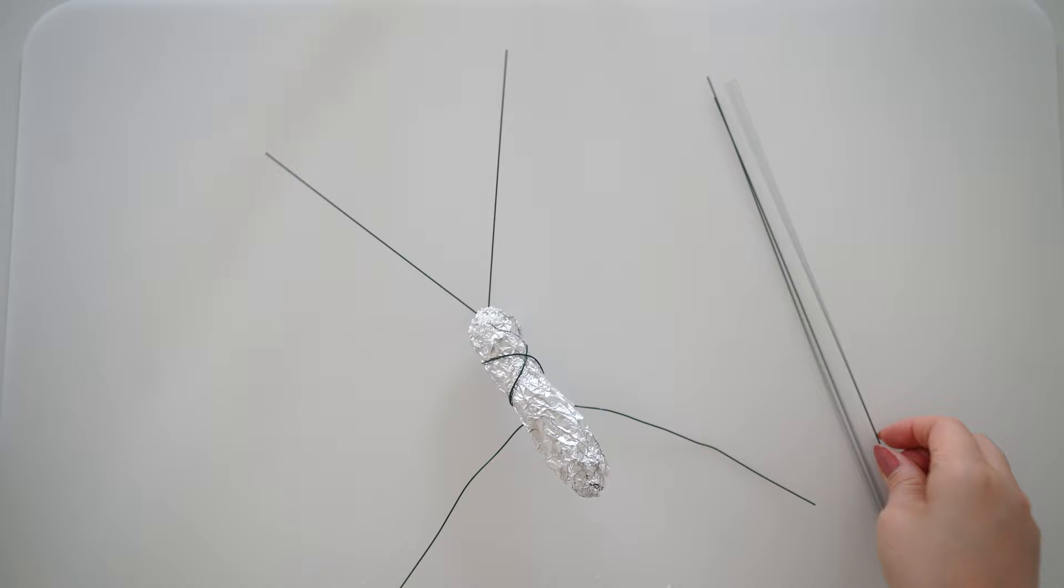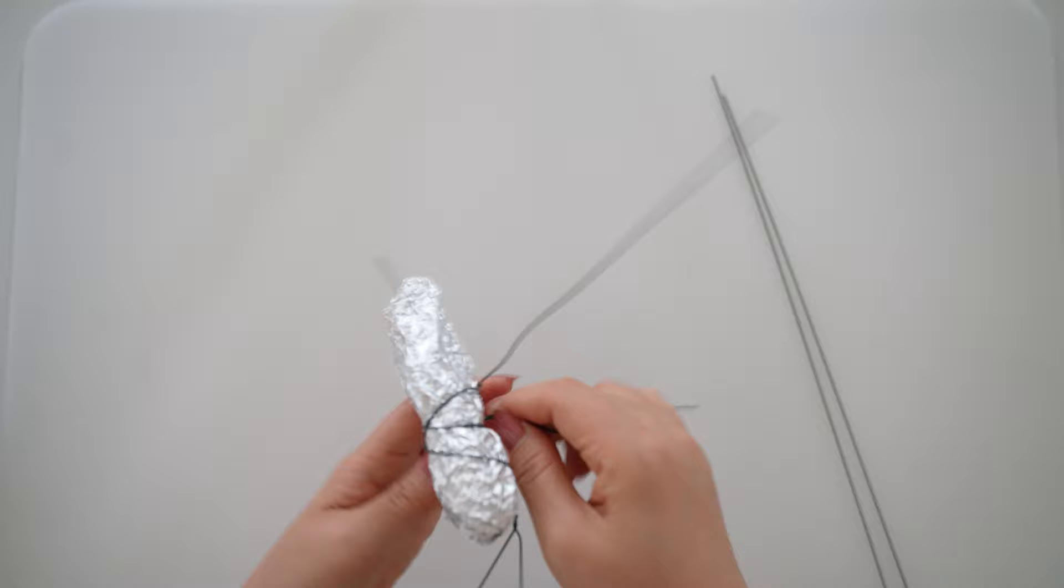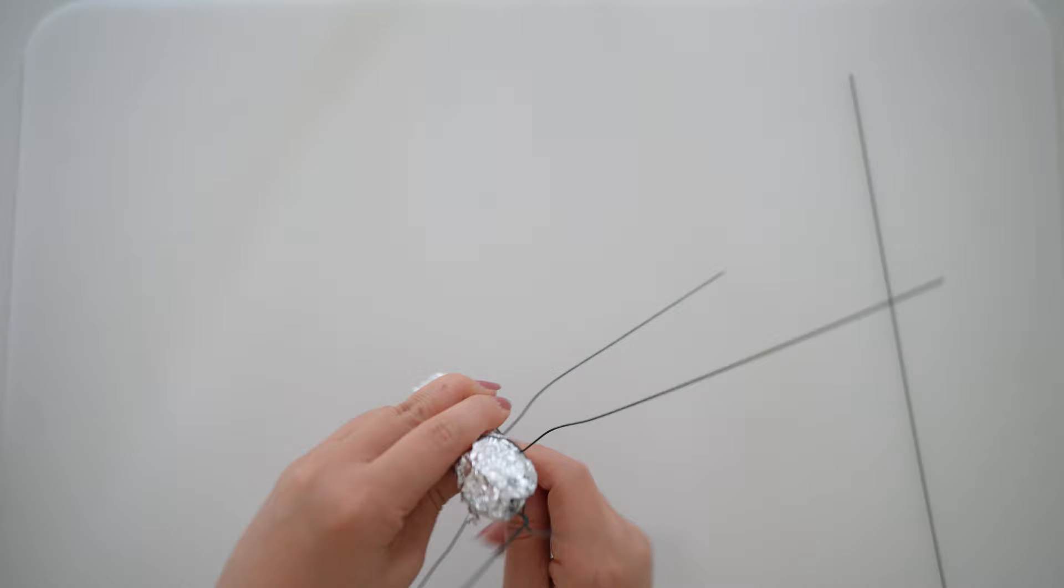Then take one floral wire and wrap around the body. We'll use this for another pair of legs, and another floral wire for another pair of legs. We'll have a total of six legs and two antennas.